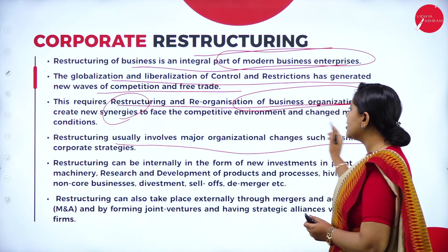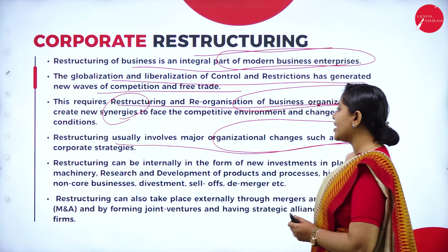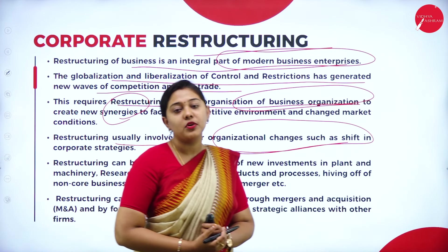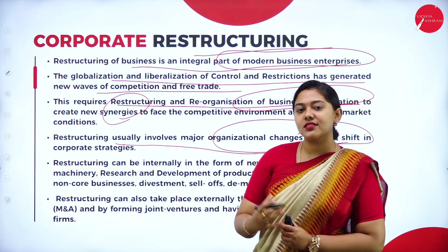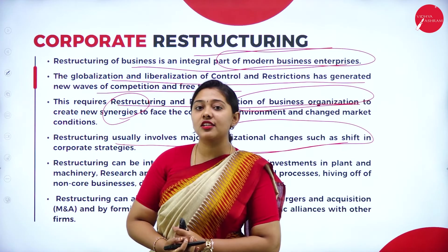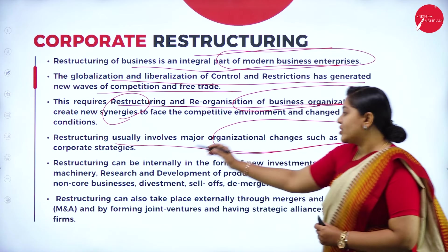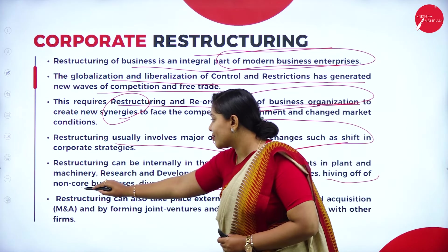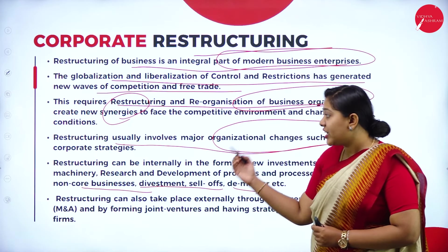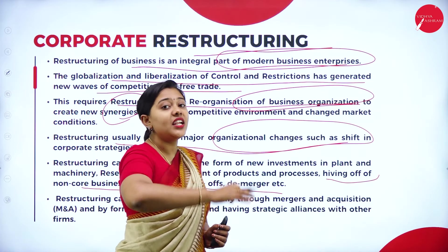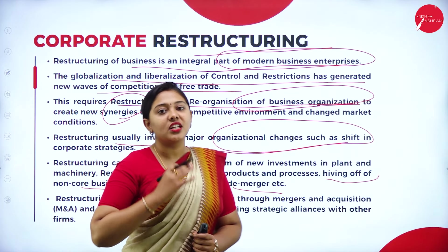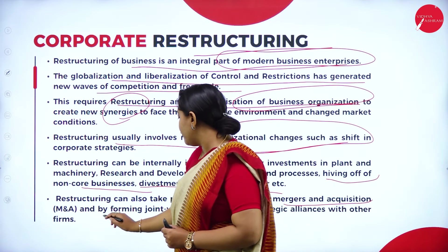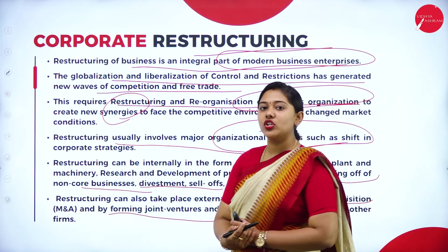Restructuring usually involves major organizational changes such as a shift in corporate strategy. There are two types: internal restructuring and external restructuring. Internal restructuring includes divesting in some business, de-merger, hiving off non-core business, and research and development — all internal to the company. External restructuring involves merger and acquisition, forming joint ventures, and having strategic alliances. For example, Reliance is regularly coming up with new strategic alliances and policy making — that is all restructuring strategy.